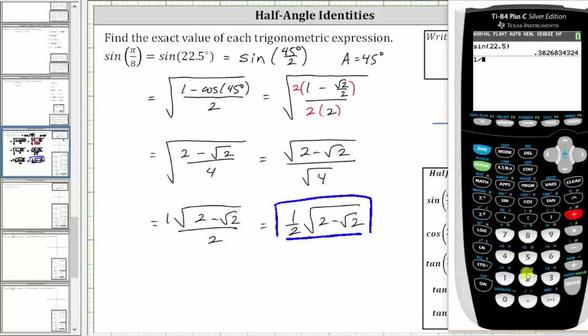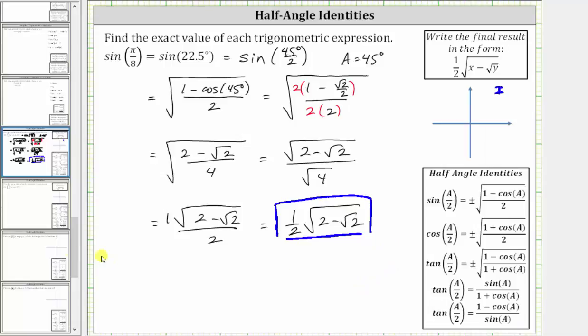And now we'll approximate this exact value, which is one half, or one divided by two, times the square root. Under the square root, we have two minus square root two, so two minus second x squared brings up the square root, two, and then enter. And notice how we do get the same decimal approximation, verifying our work is correct. I hope you found this helpful.